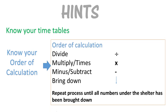Order of calculation is just the steps that you're going to follow to complete your sum. So you're first going to divide, then you're going to multiply, then you're going to minus, and then you're going to bring down. You're going to repeat the process until all the numbers under the shelter have been brought down.